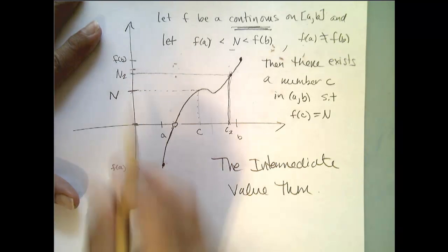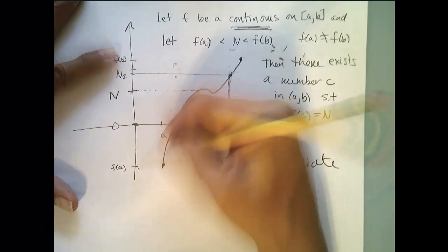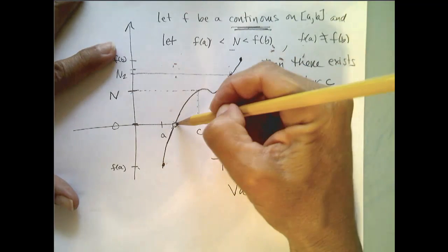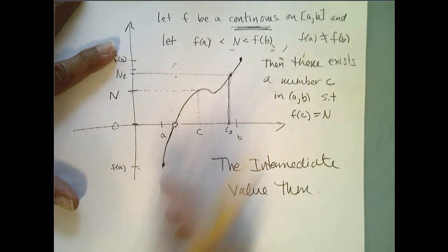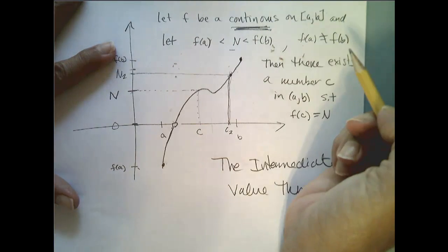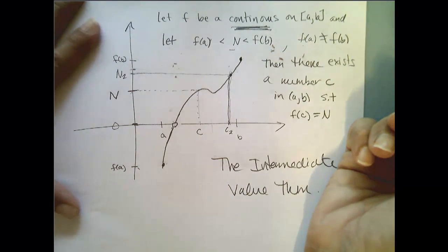So if I choose zero as my value between f of a and f of b, there is no value between a and b that gets mapped to zero. So I must have continuity in order to apply the intermediate value theorem.